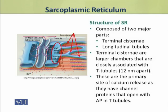Terminal cisternae are larger chambers which are closely associated with the T-tubules. यह दोनों जो हैं, इनकی association इتنی close ہے کہ ان کے درمیان میں جو distance ہے, that is only about 12 nanometers. Terminal cisternae are the primary sites of calcium release. जो sarcoplasmic reticulum calcium release करती है वो actually पूरी sarcoplasmic reticulum नहीं करती, and these channels open with action potential in T-tubules, and जब यह open होते हैं, तो उस वक्त calcium release होती है.